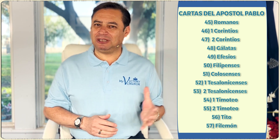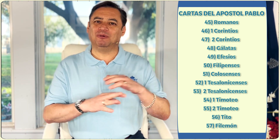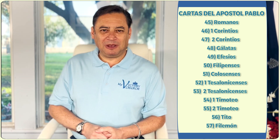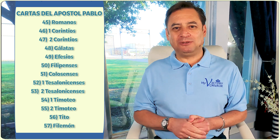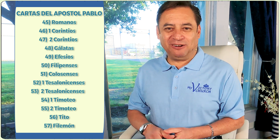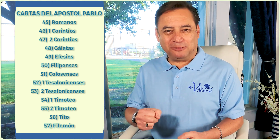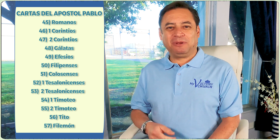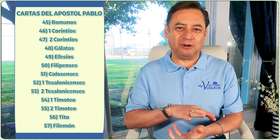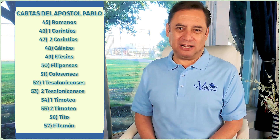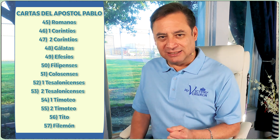Por ejemplo, hicimos el estudio de la carta a los romanos, hermosos 16 capítulos. En la carta a los corintios pasa algo muy interesante: en la primera carta, Pablo está muy molesto con una persona que anda haciendo unas malvadas acciones y lo reprimende. Pablo lo reprimenda y le dice, ¿cómo es que puedes hacer esto, bandido? Pero luego, en la segunda carta, él empieza a hablar de cómo hay que restaurarlo.